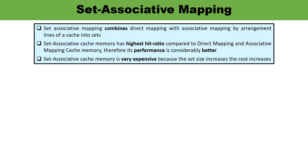Coming to set associative mapping — what is it? This mapping technique utilizes the concept of both direct mapping and associative mapping. Direct mapping is used to identify which particular block of main memory is copied into which set. And within that particular set, the line to be used for copying data is determined with the help of associative mapping. There is an advantage: set associative cache mapping has better performance compared to the previous two types of mapping, and it gives the highest hit ratio.